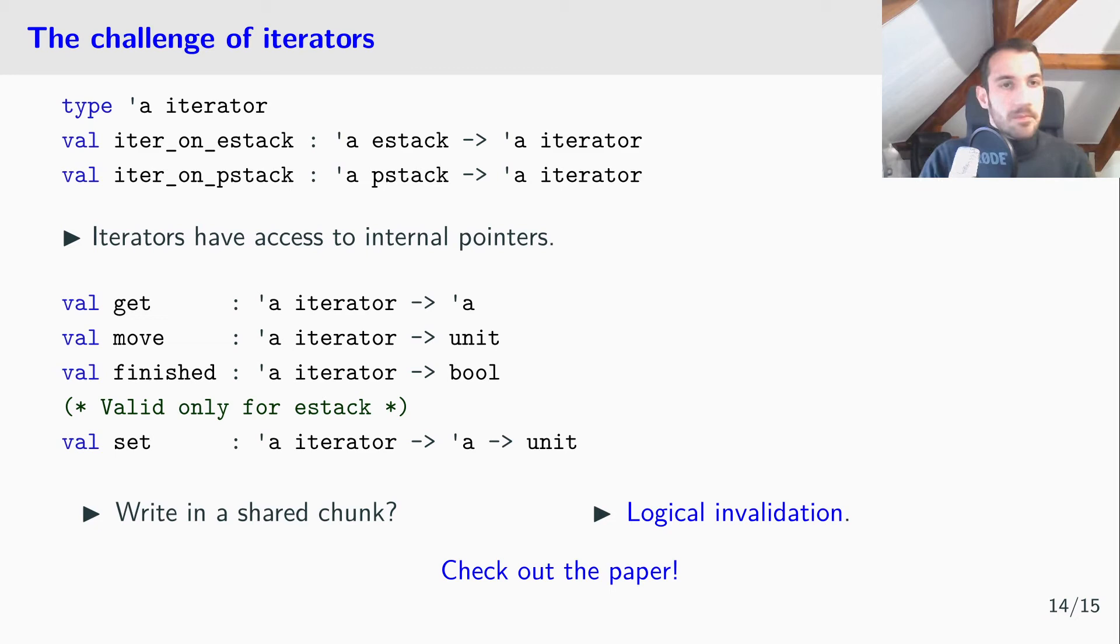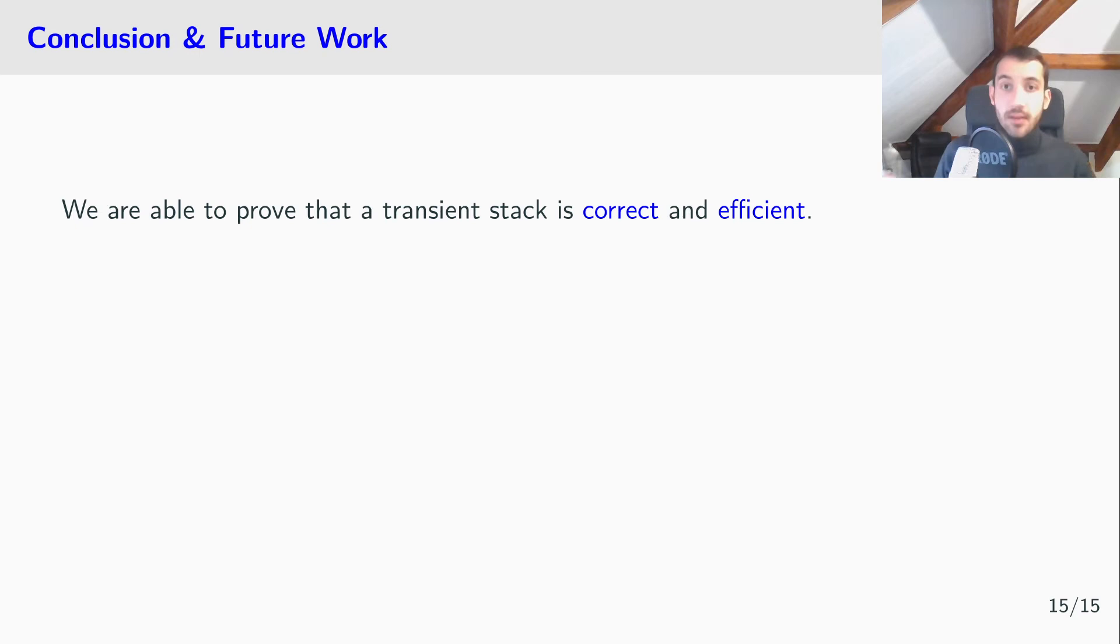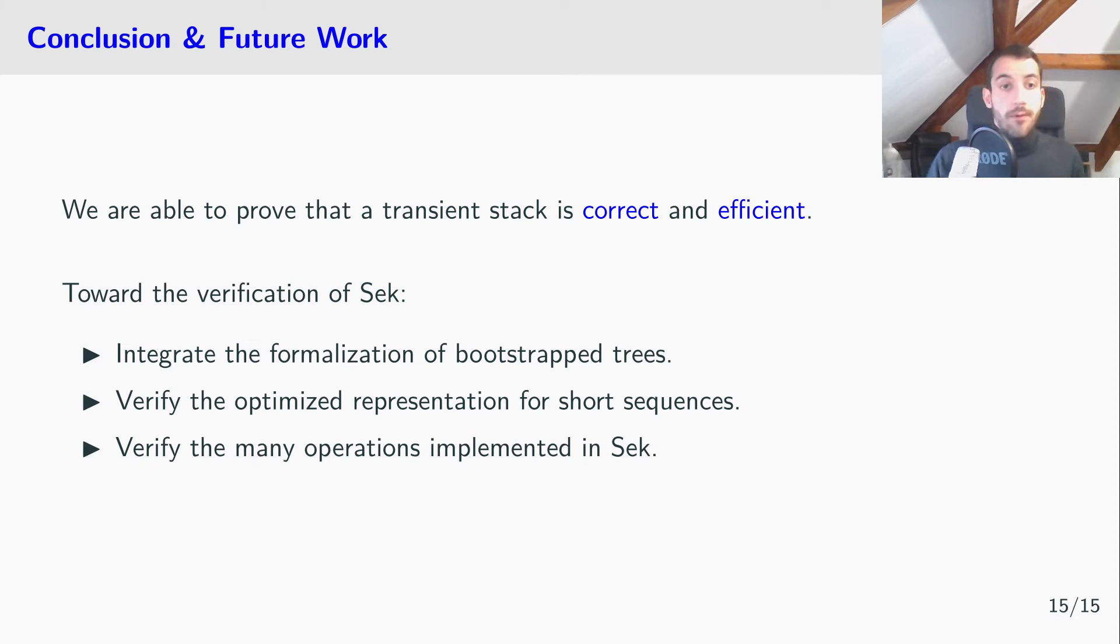In conclusion, we are able to prove that the transient stack is both correct and efficient. Towards the full verification of Sec, we first need to integrate the existing formalization for bootstrapped trees, because Sec is implemented using a bootstrapped tree of shared chunks, and not a list of chunks. After, we have to verify the optimized representation for shared sequences made in Sec, and of course verify the many operations implemented in Sec. That's all for me. Thank you for your attention, and I will be taking questions.